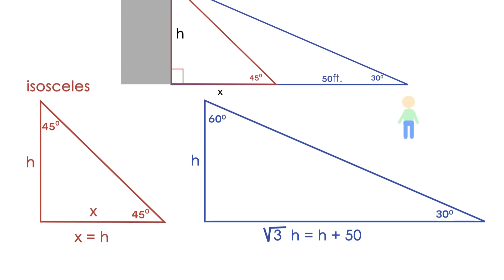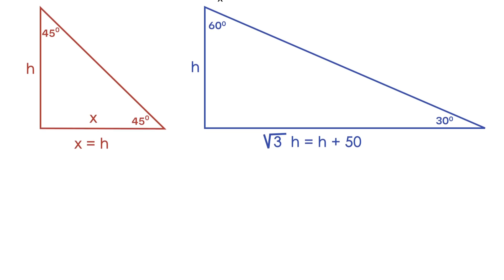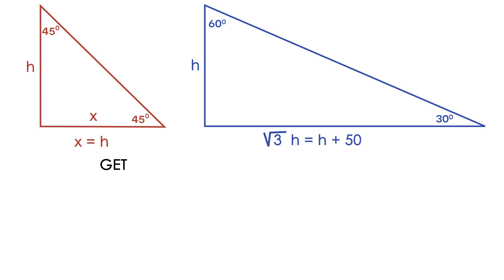And now we have an equation in which we can solve for h. So the first thing we can do is get all the h terms to one side of the equation. And we can do this by subtracting h from both sides. On the right side, the h's will cancel each other out.